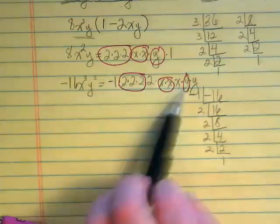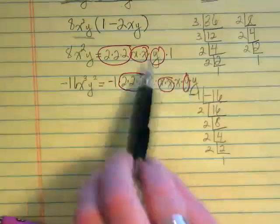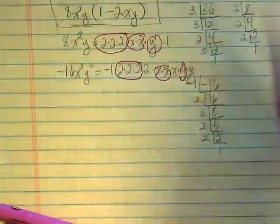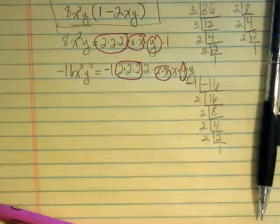Because the things that were circled were the common factors, the greatest common factor. So I hope that helps clarify your question, and let me know what help you need next, okay?